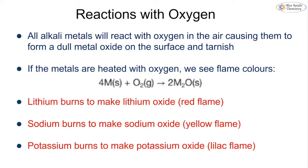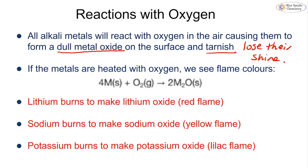All alkali metals react with oxygen in air and form a dull metal oxide on the surface, which we see as a tarnish — they lose their shine. When freshly cut they are shiny metals, but as soon as they react with oxygen they tarnish and become dull.